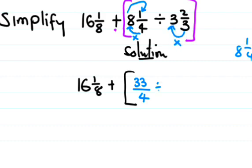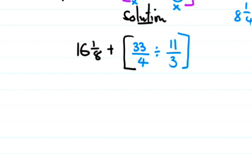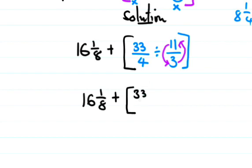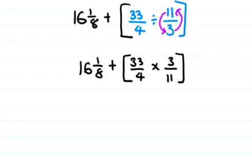When we have division, we introduce multiplication by flipping the second fraction. So we have 16 1/8 plus 33/4 multiplied by 3/11.